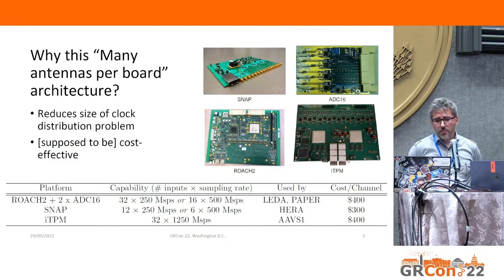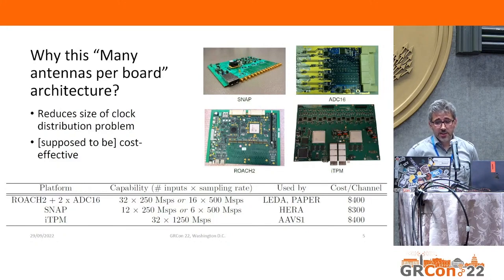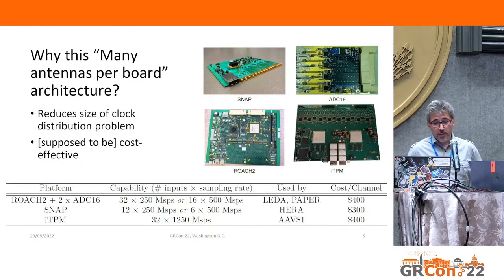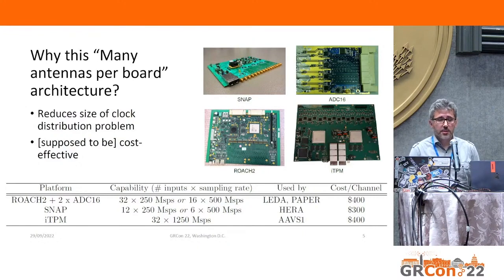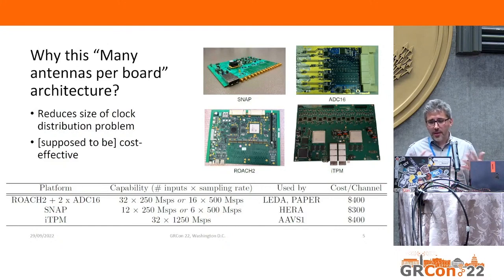Snap is one platform used for HERA — it does six times 500 mega-sample. Most of these have been developed by the CASPer community. ITPM is a board developed for the Square Kilometre Array project, which is another large radio astronomy project being deployed soon. These give you a reasonably low cost per channel — a few hundred megahertz of bandwidth at a bit depth of 8 to 12 or so.